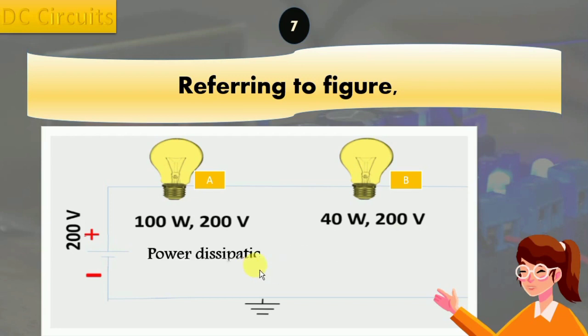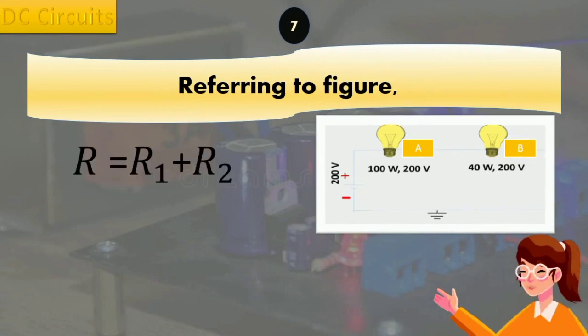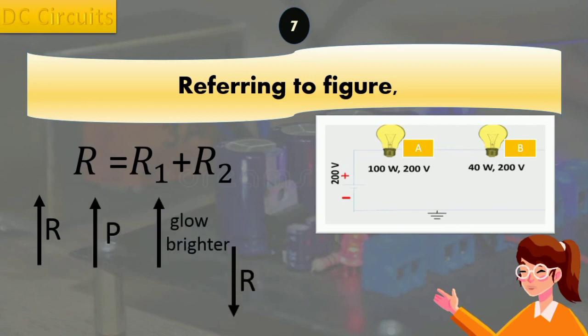In a series circuit, the total resistance is equal to the sum of the individual resistances. Therefore, the bulb with the higher resistance will dissipate more power and glow brighter. Conversely, the bulb with the lower resistance will dissipate less power and glow dimmer.